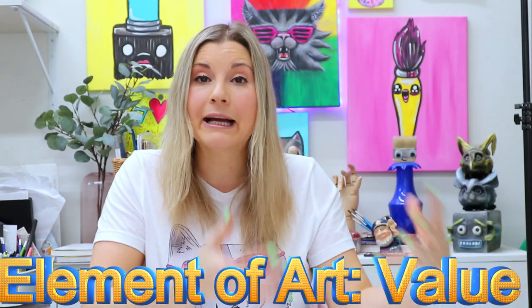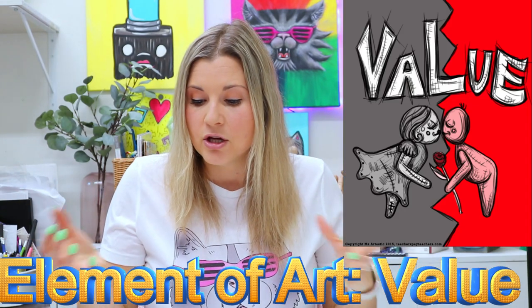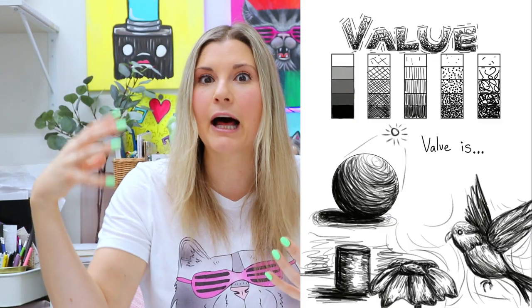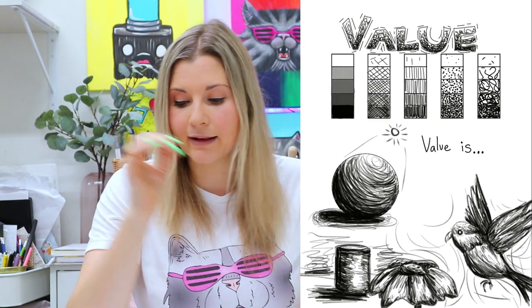So value is the lightness or darkness of a color. How a light source shines on an object will determine how bright an area might be, the value it is, or even how the shadows will be affected on the object. So where the cast shadows might lay.